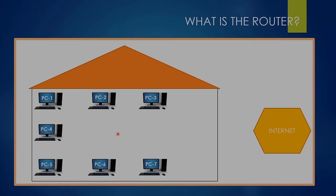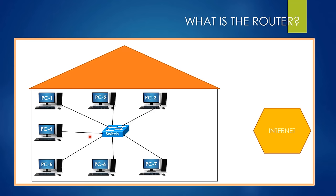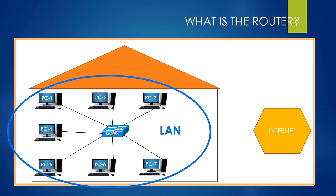In our previous lesson, we briefly talked about how to connect computers in an office and how to create a network. We can create a LAN with the help of a switch device. But the problem is currently these computers can only communicate among themselves — they cannot communicate with the internet. The only task of the switch is to create a LAN and enable the communication of devices in the same LAN.